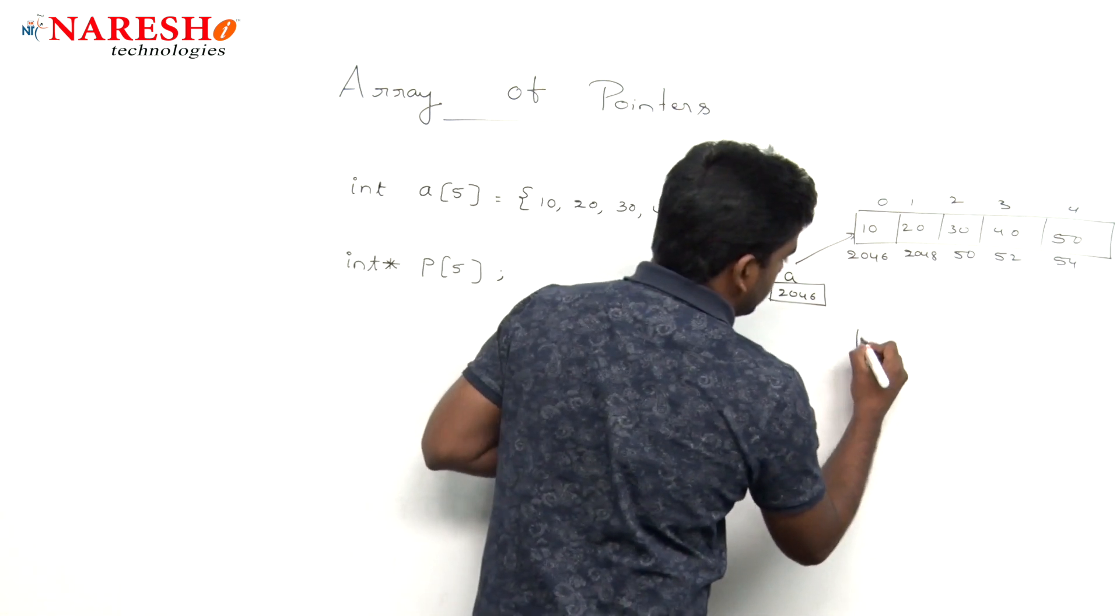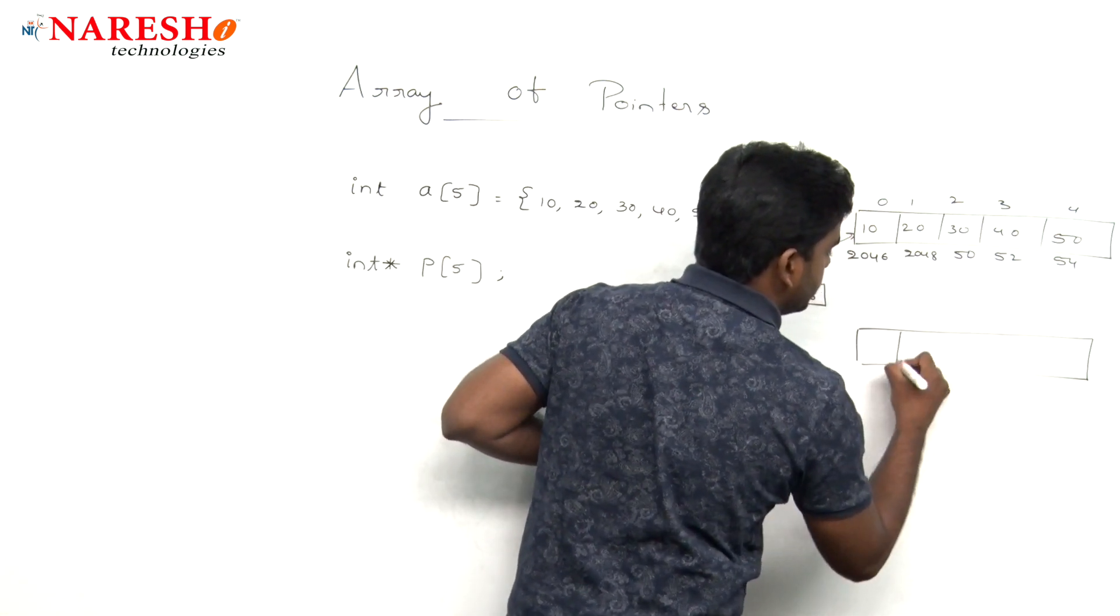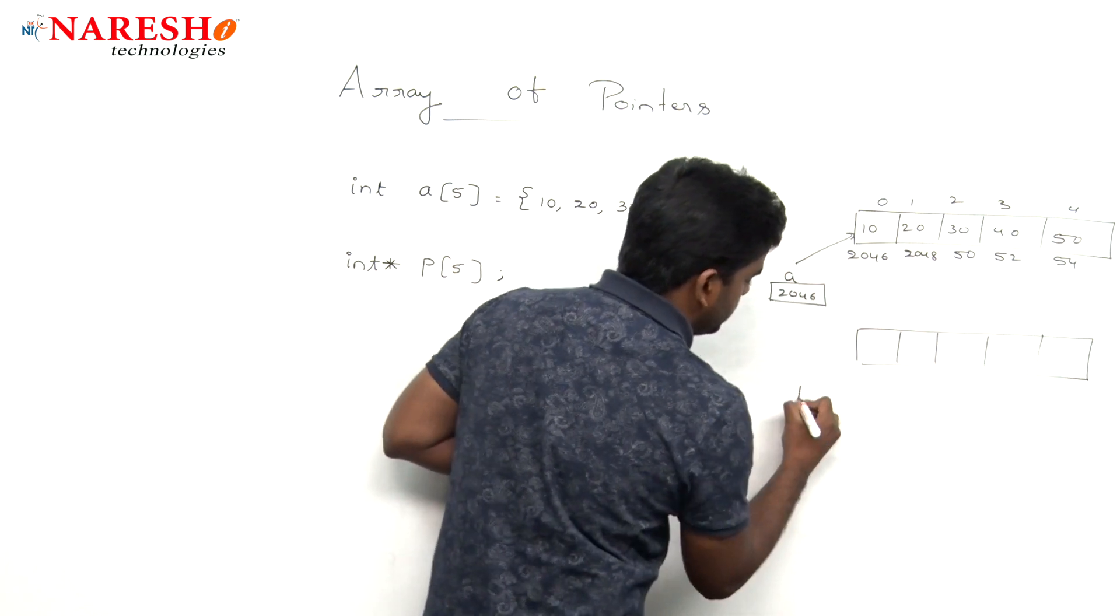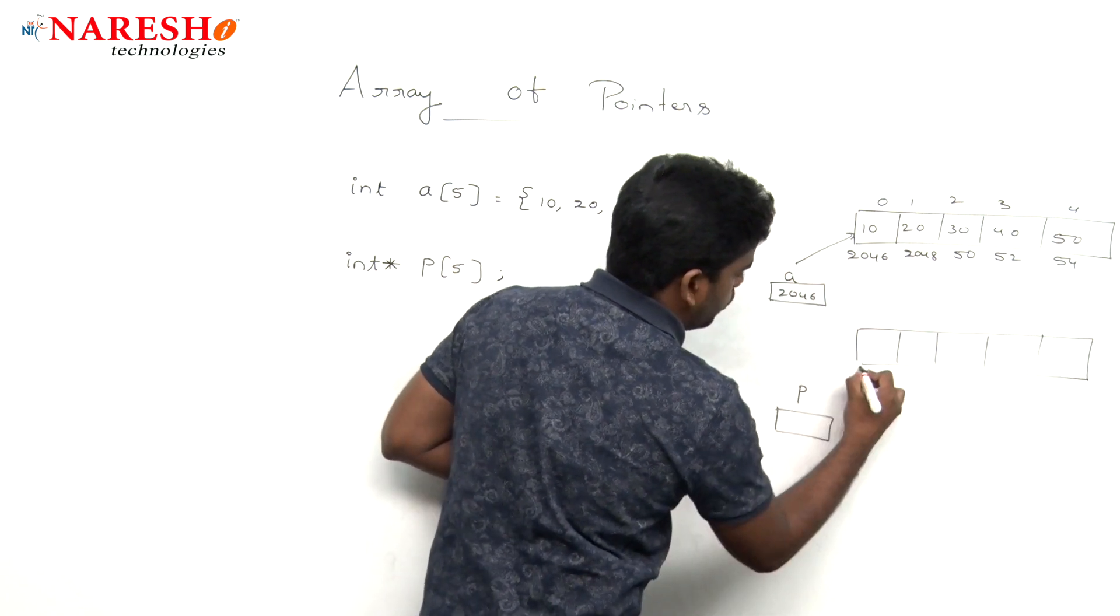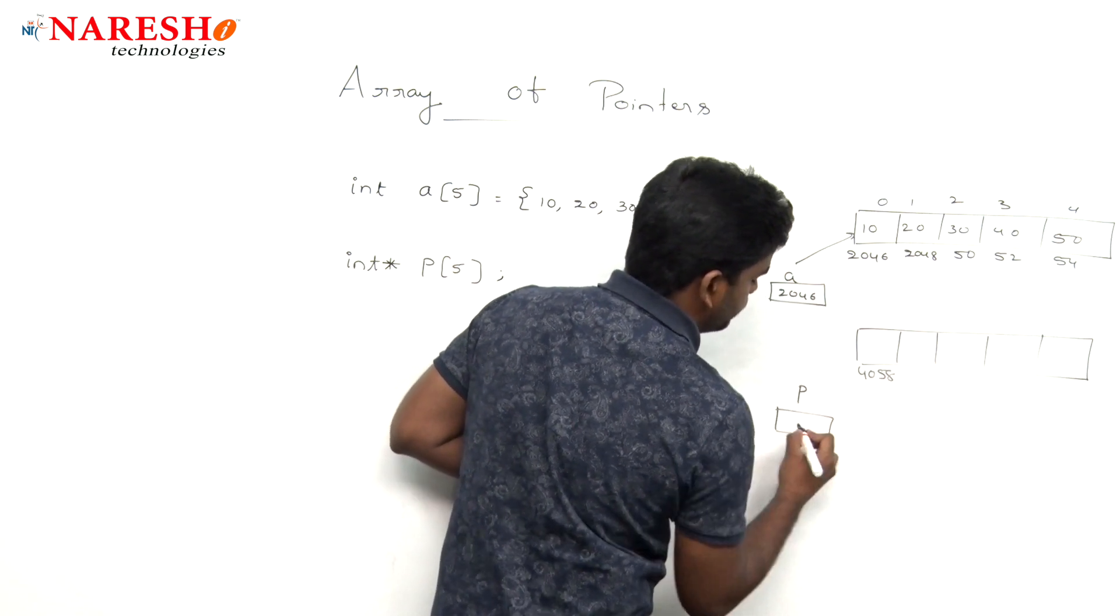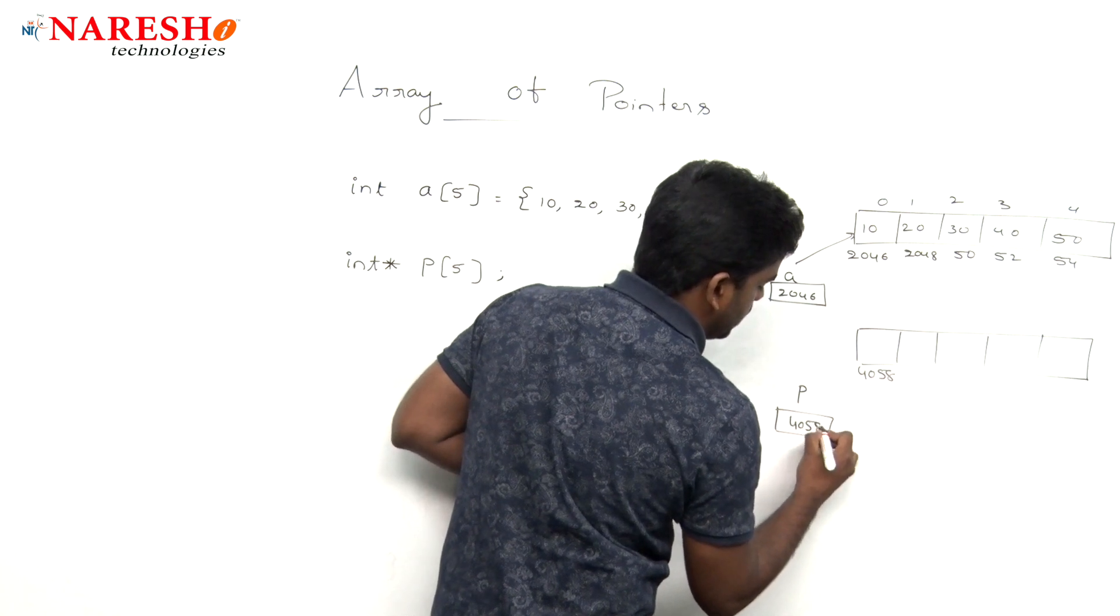So, here memory will be allocated. Memory will be allocated, and p is pointing to some other location like 4058 and is pointing.